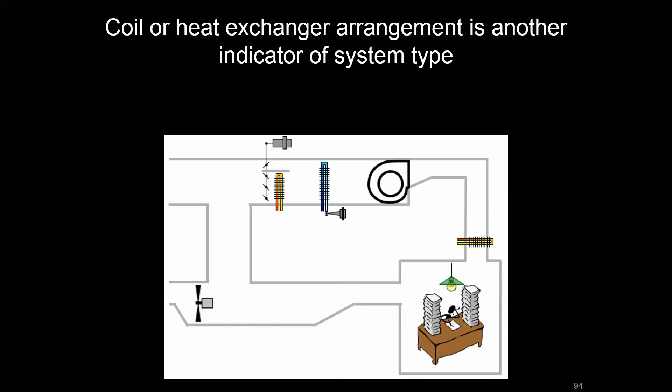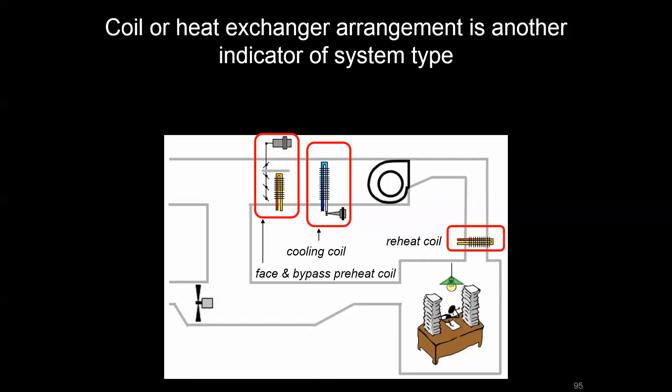The coil arrangement inside the air handling unit and within the greater airside system is important as well. Here we have a very specific combination of coils: a face and bypass preheat coil that can have air brought across it or bypassed depending on damper position, a cooling coil, and a reheat coil shown here in the zones.